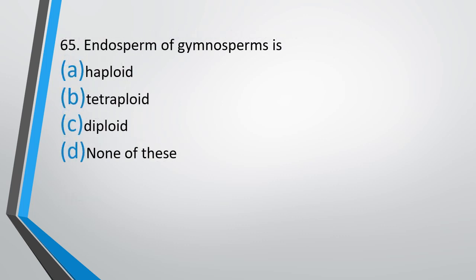Question number 65. The endosperm of gymnosperms is: haploid, tetraploid, diploid, or none of these. The correct answer is option A, that is haploid.